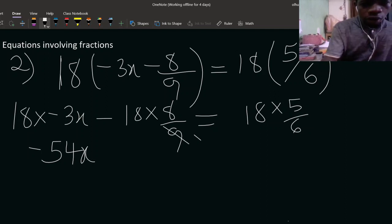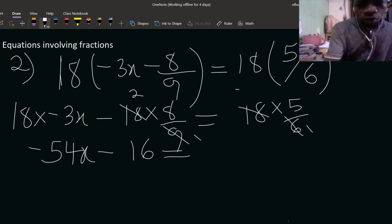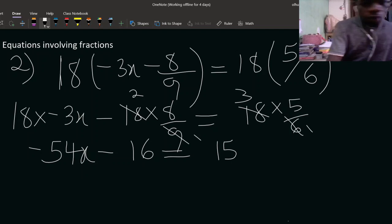So this will give us minus 54x. Now here 2 times 8, that is 16. And that can be equal to 3 times 5, that is 15. So what do we have? We have minus 54x minus 16 can be equal to 15.